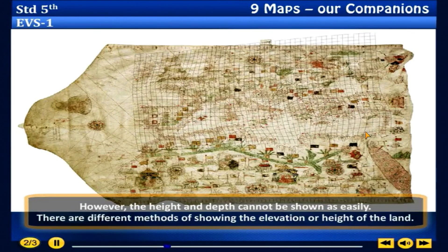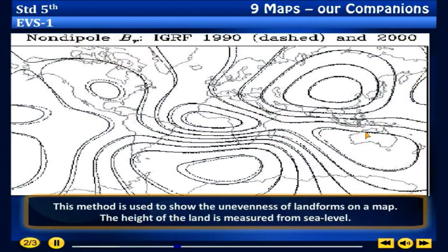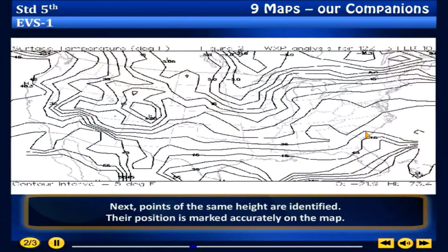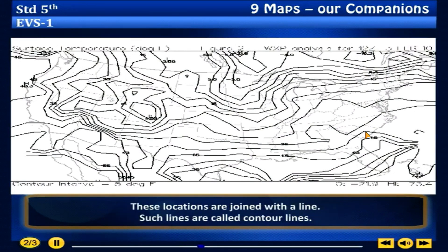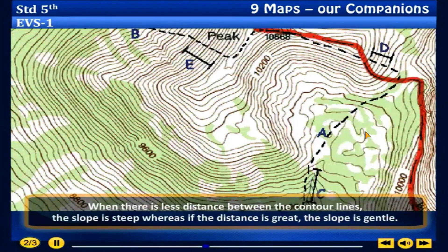There are different methods of showing the elevation or height of the land. Method 1: Contour line method. This method is used to show the unevenness of landforms on a map. The height of the land is measured from sea level. Next, points of the same height are identified and their position is marked accurately on the map.